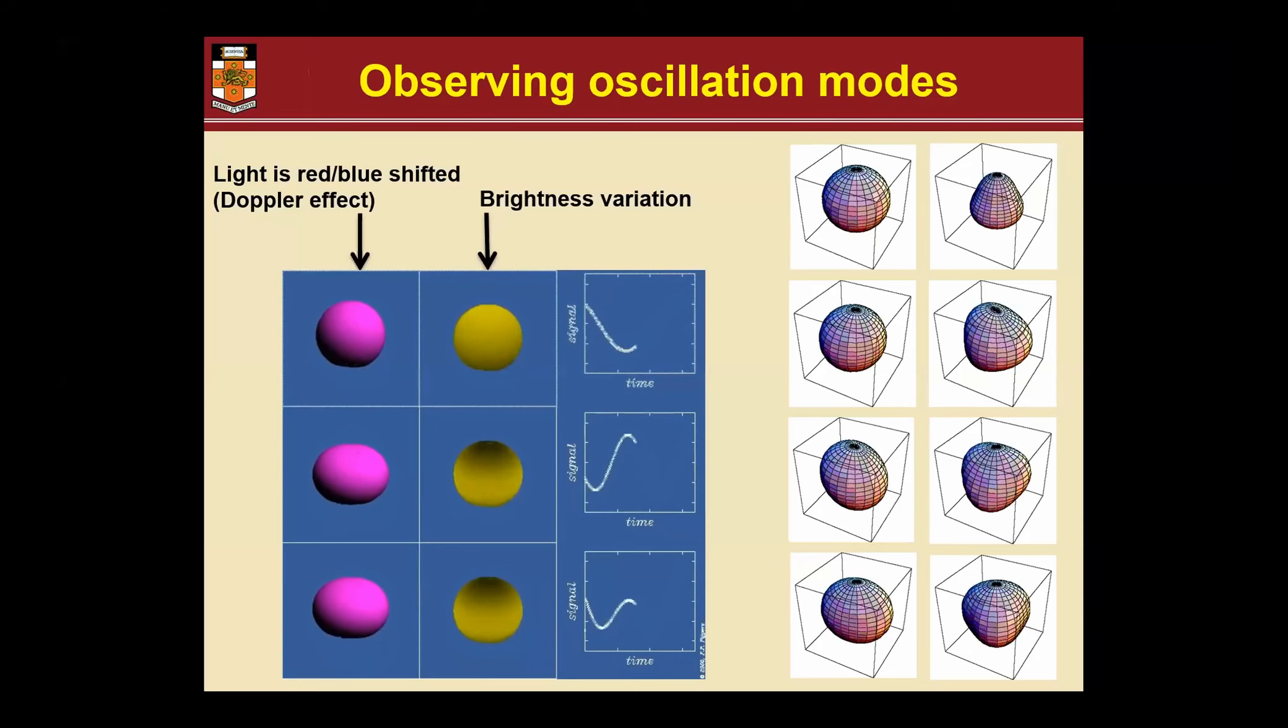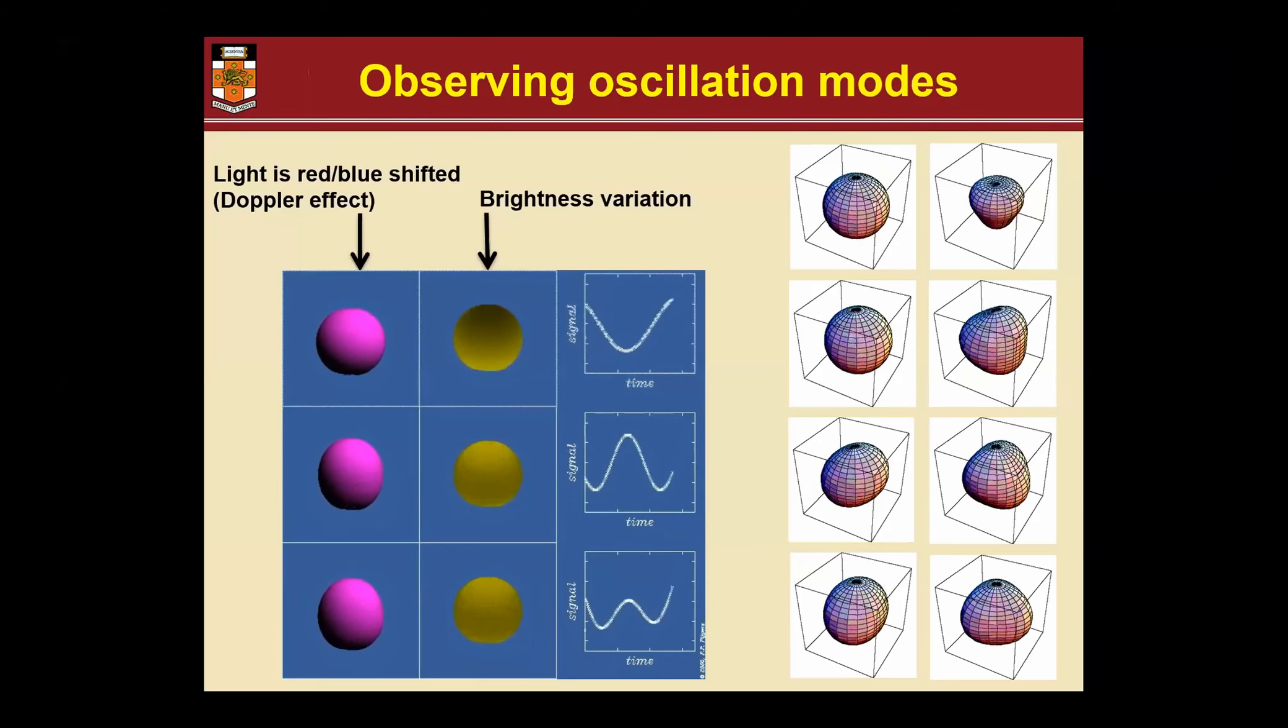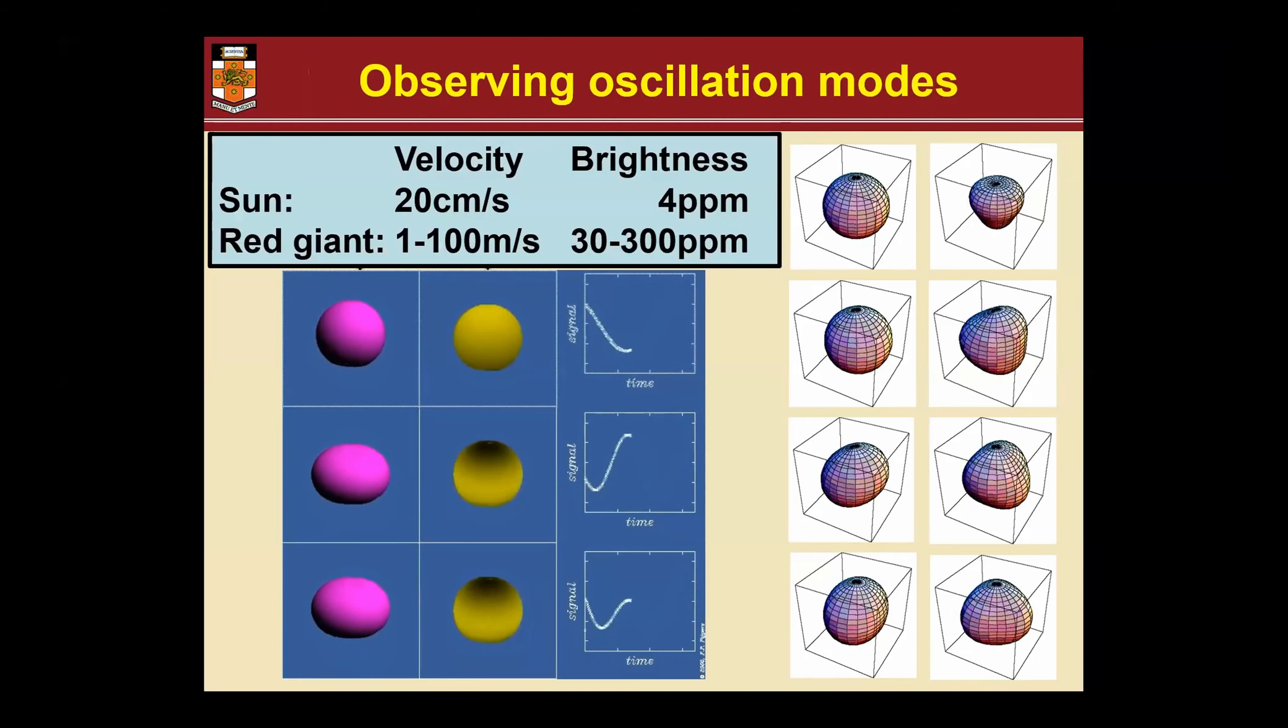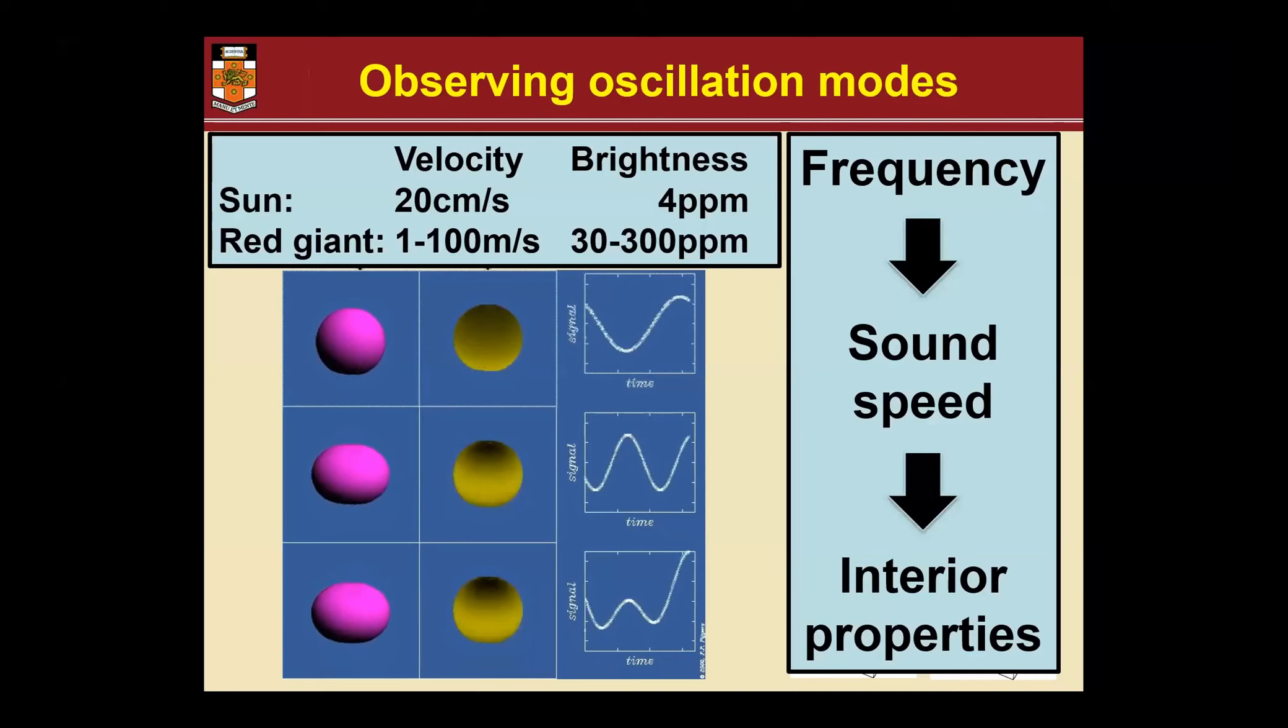When you then measure these frequencies in brightness or in the Doppler shift, you actually get the frequencies of the sound. These are just some beautiful standing waves in spheres. That sound speed is of course dependent on interior properties, and that's the essence of asteroseismology - you measure frequencies that depend on sound speed and interior structure. They are very small amplitudes but we can do this both for dwarfs and for giants.